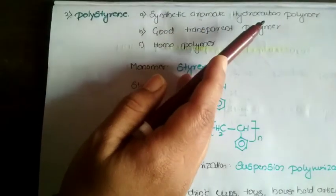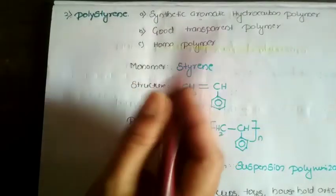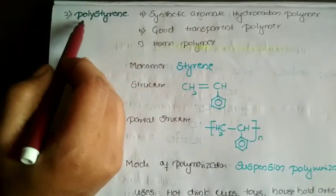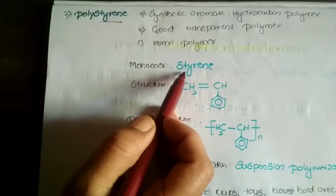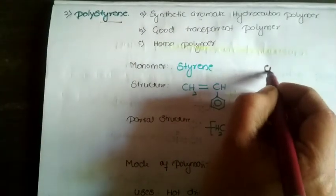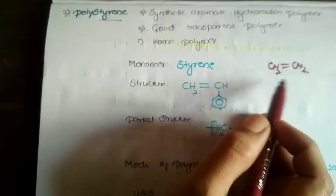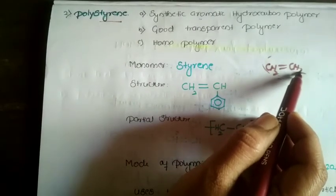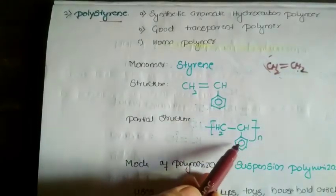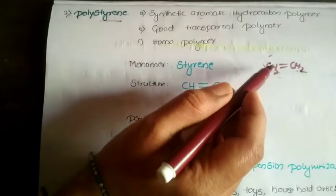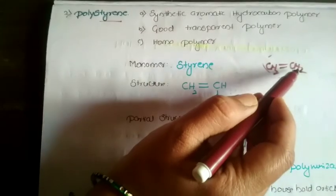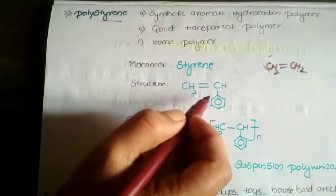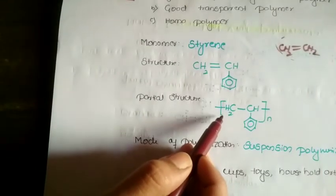Next is polystyrene. It is a synthetic aromatic hydrocarbon polymer, a good transparent polymer, and a homopolymer. Using the same short trick — the monomer is styrene. The structure is derived from the basic CH₂=CH₂: remove one hydrogen from one carbon and add a benzene ring in its place, giving CH₂=CH with a benzene ring attached — that is the structure of styrene.